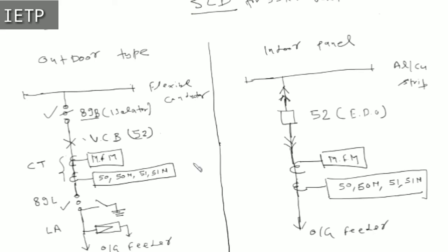This is a brief comparison between indoor panel and outdoor switchyard SLD for the 33 kV level. For 132 kV and other voltage levels, we will discuss in the next class.